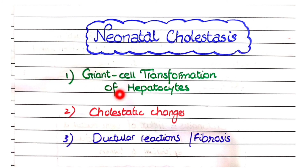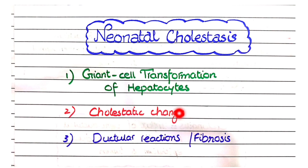For neonatal cholestasis, the most striking morphological feature is giant cell transformation of hepatocytes — this is the key feature asked in MCQs. Along with this, since it involves cholestasis, you will see cholestatic changes characterized by feathery degeneration. Due to bile accumulation causing hepatocyte damage, there will be regeneration of stem cells known as ductular reactions, and there may also be fibrosis in the liver.